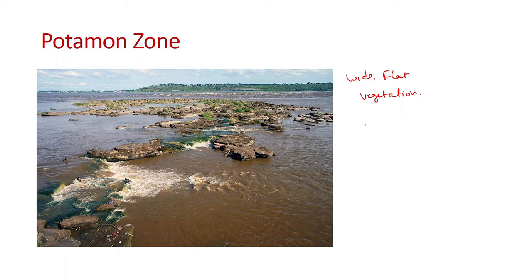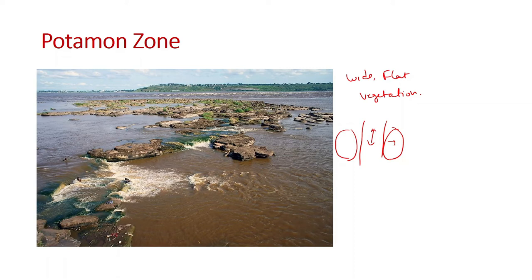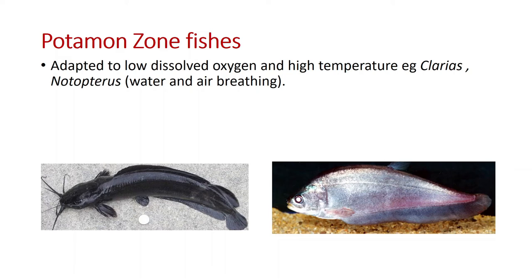Laterally, the Potamon zone has flood plains where extra water stays — these flood plains are not permanent. Many water bodies are found on the plain ranging from small temporary pools to large permanent lagoons or swamps around the main river. In the flood plain water bodies, dissolved oxygen concentration falls in the dry season, particularly in small ones which may become completely depleted of oxygen. Fishes in this zone have adaptations for low dissolved oxygen and high temperature.